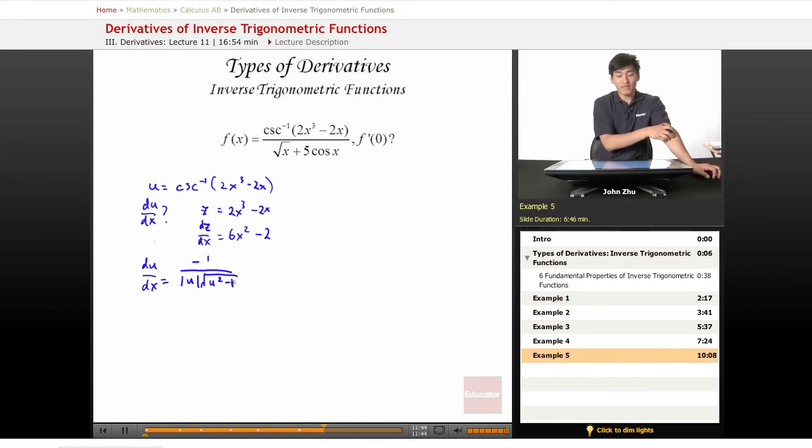So we have to plug our u back in, or in this case, our z. So then we are actually looking at our dz dx. So first we have to find our du dx, then we have to find our dz dx.